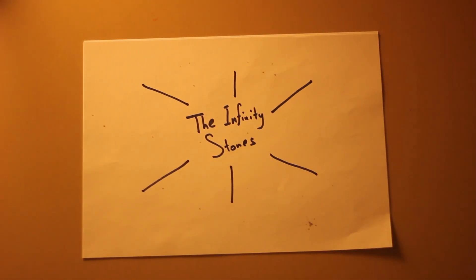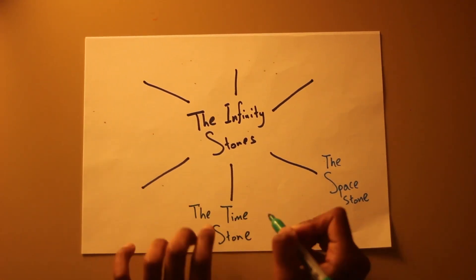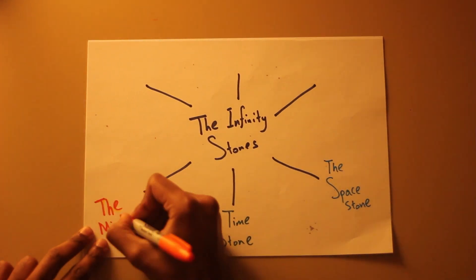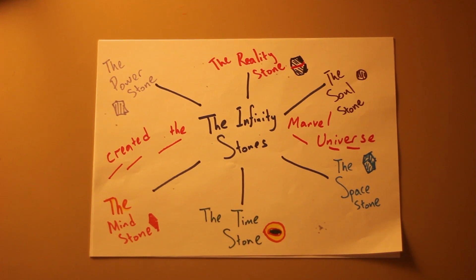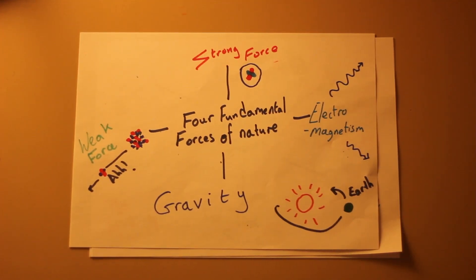So there are six infinity stones and these control all the forces in the Marvel Universe and space and time and sometimes people's consciousness. And it might seem ludicrous to say that six objects can control all the forces in the universe, and to be fair that is true, but we can divide up all the forces into four types in our universe.